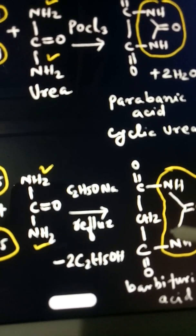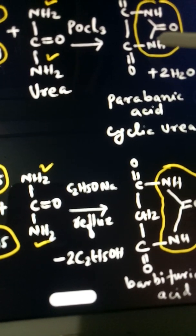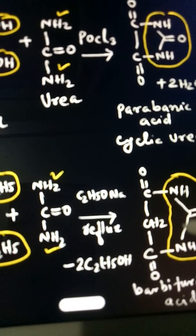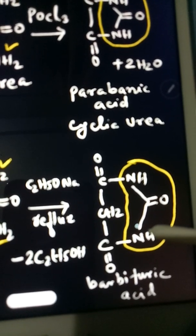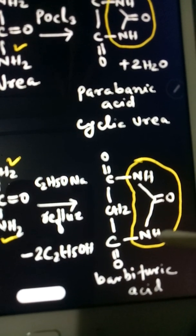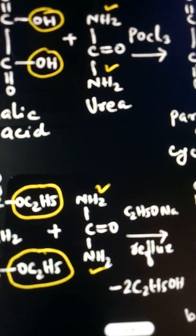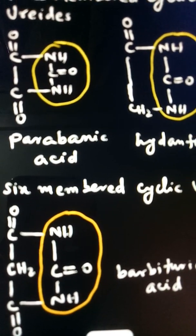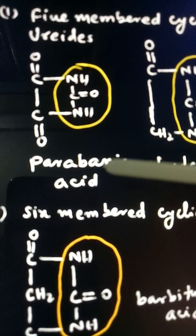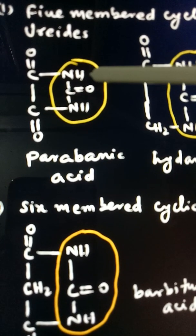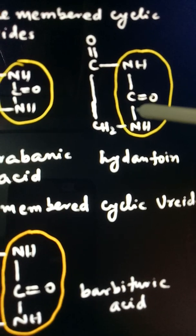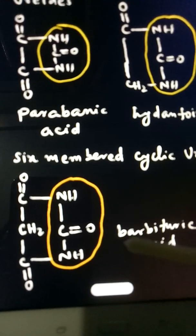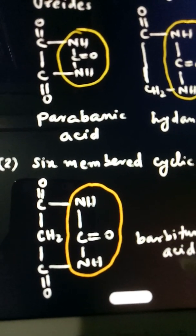So parabanic acid is an example of 5-member cyclic ureide, and barbituric acid is an example of 6-member cyclic ureide. For 5-member cyclic ureides, you see the parabanic acid - the urea moiety is there. For 6-member cyclic ureides, barbituric acid - the urea moiety is there.